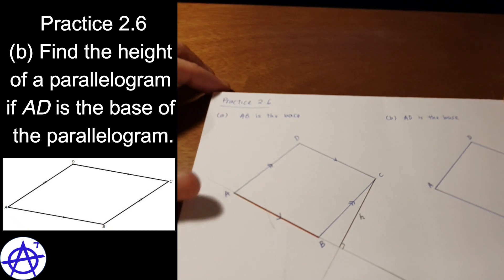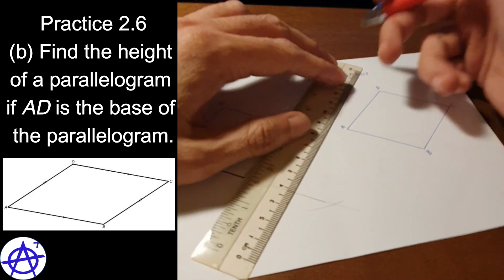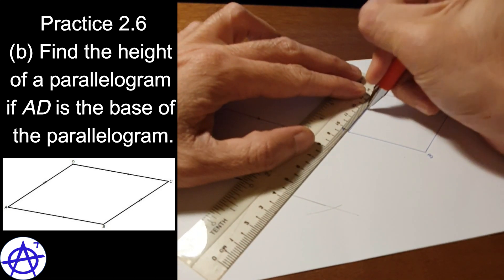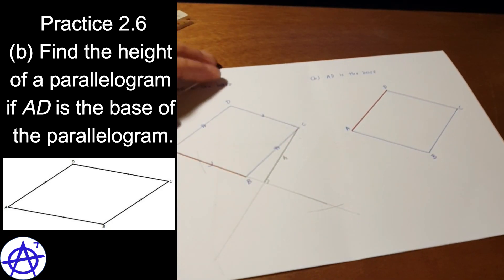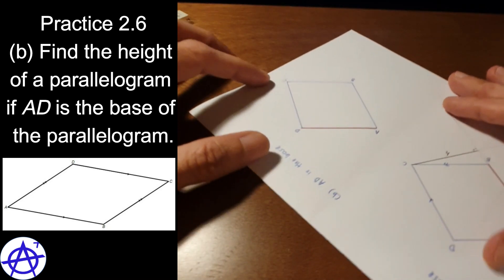Now similarly, if AD is the base, so AD is the base. So where is the height? I would suggest you turn the base so that the base is facing you.